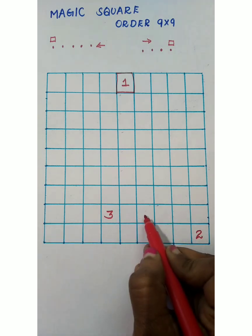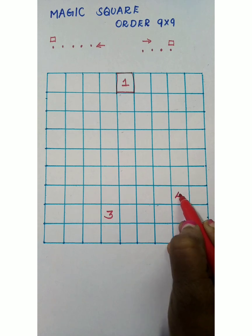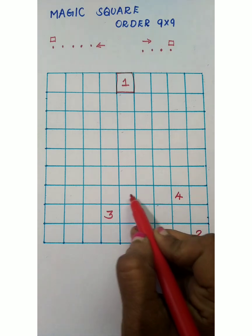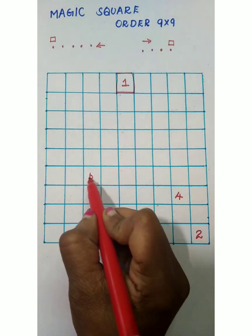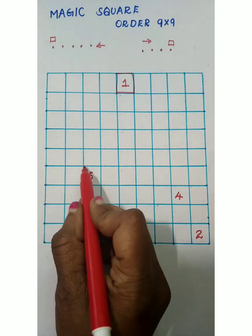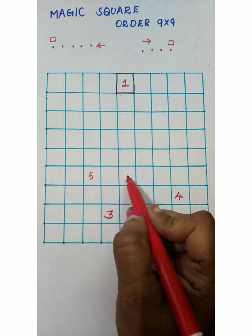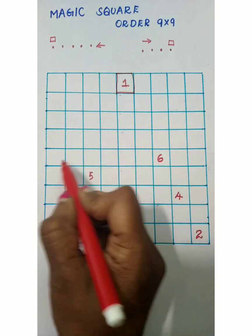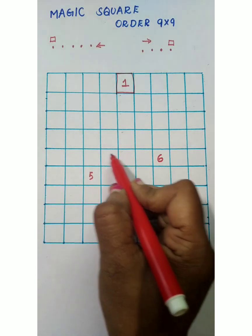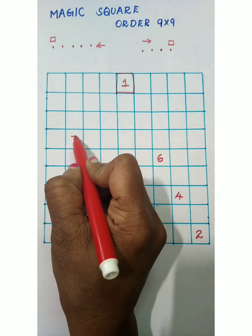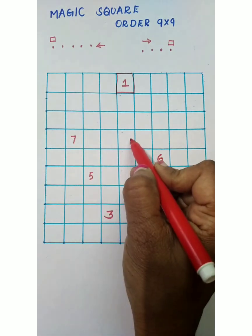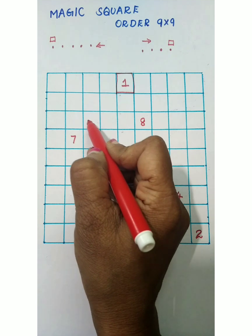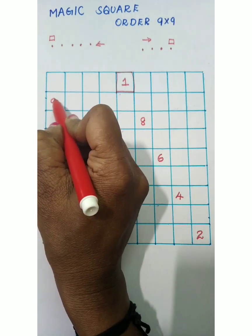Move right four boxes for digit 4: one, two, three, four — place it. Then move left five boxes for digit 5: one, two, three, four, five. Move right four for digit 6: one, two, three, four. Move left for digit 7: one, two. Move right for digit 8: one, two, three, four. Move left for digit 9: one, two, three, four, five — place digit 9.